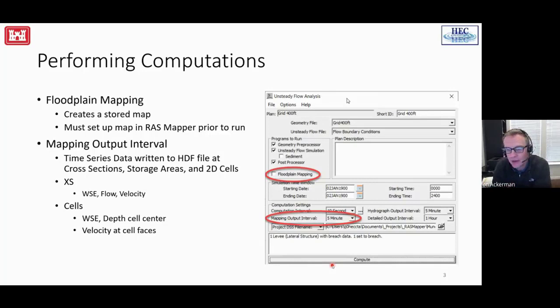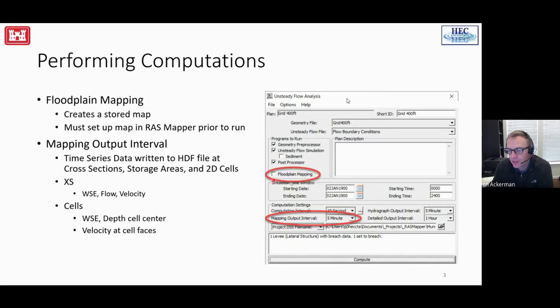If you're in the 2D class, you should have used RAS before and been running 1D models. The simulation window for a 2D model is the exact same as a 1D unsteady flow model. One thing you'll notice is an additional option added recently for floodplain mapping. You don't ever need to turn that on — it's for the CWMS real-time water management crew, when you have an existing plan and want inundation maps automatically generated at the end. That requires setting up stored maps in RAS Mapper.